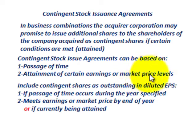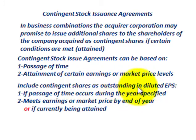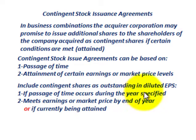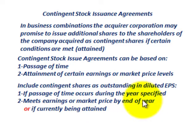We're going to be looking at market price levels in this example. We would include contingent shares as outstanding in the diluted earnings per share if: one, the passage of time occurs during the year that was specified; or two, it meets the earnings or the market price by the end of the year specified, or if it is currently being attained.